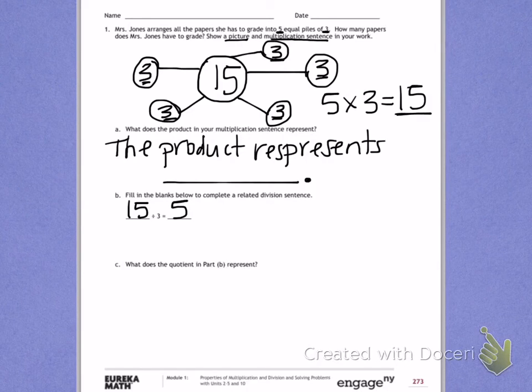Letter C. What does the quotient in part B represent? So we need to think about what does the 5 represent?